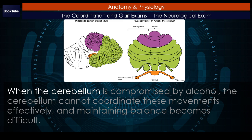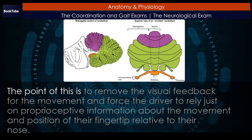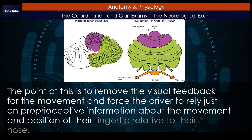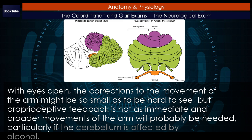When the cerebellum is compromised by alcohol, it cannot coordinate these movements effectively and maintaining balance becomes difficult. Another common aspect of the FST is to have the driver extend their arms out wide and touch their fingertip to their nose, usually with their eyes closed. The point of this is to remove the visual feedback for the movement and force the driver to rely just on proprioceptive information about the movement and position of their fingertip relative to their nose. With eyes open, the corrections to the movement of the arm might be so small as to be hard to see, but proprioceptive feedback is not as immediate and broader movements of the arm will probably be needed, particularly if the cerebellum is affected by alcohol.